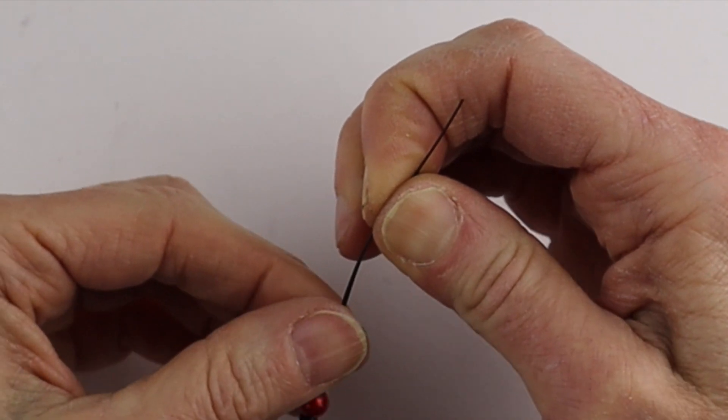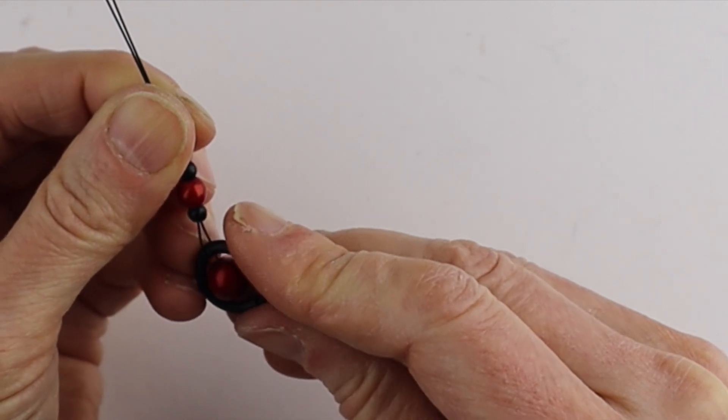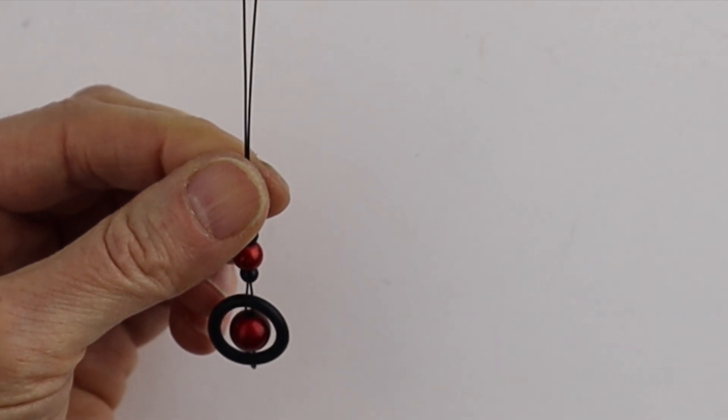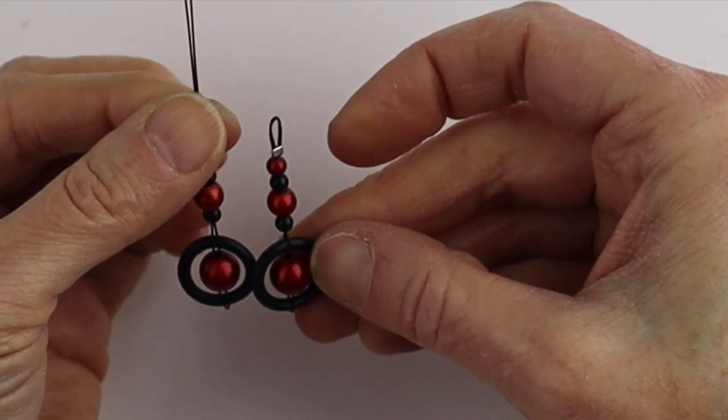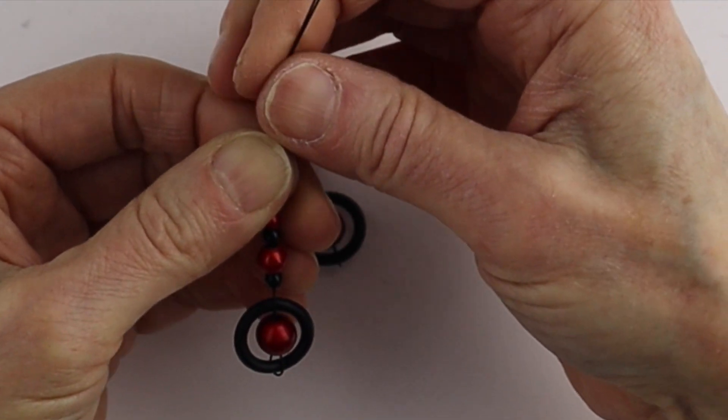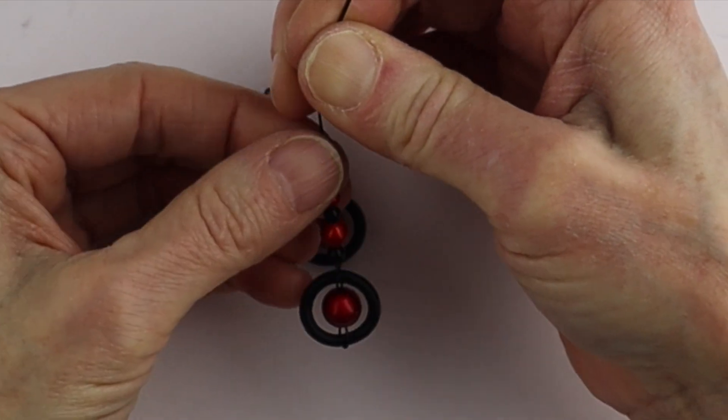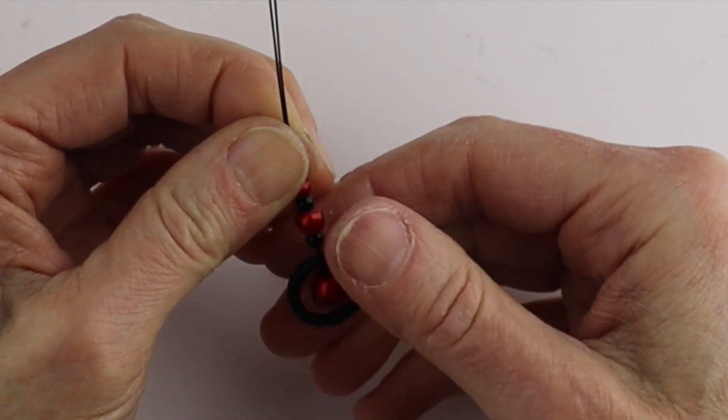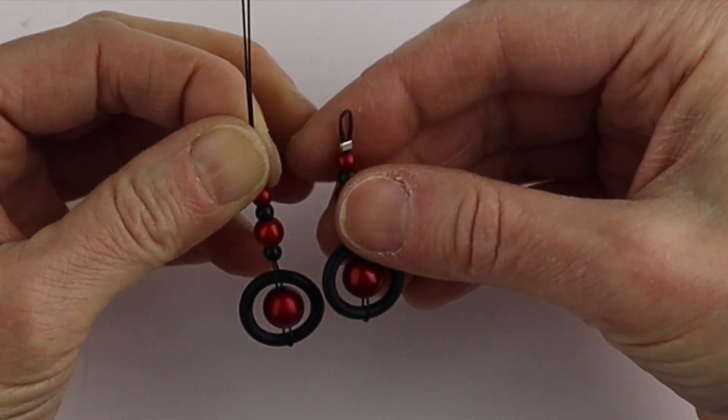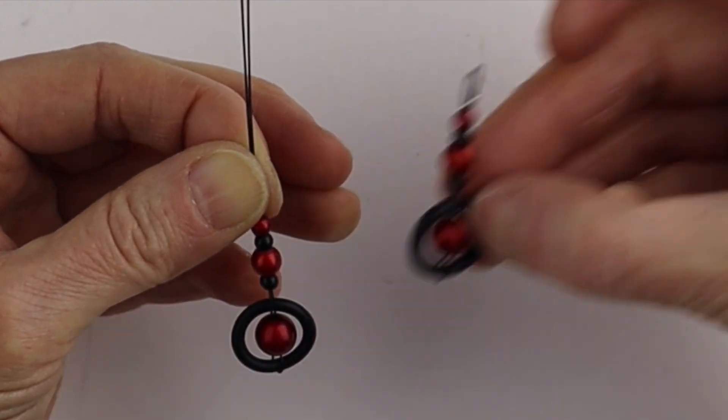They're on both pieces of Tiger Tail. Push them down, making sure the O-ring goes right to the base and is centered. I made one previously so we can compare them. This needs to be tightened up more because it's not pushed down enough. Tighten them up—make sure your bead holes aren't too big so there's tension. Compare them to make sure they're the same size.